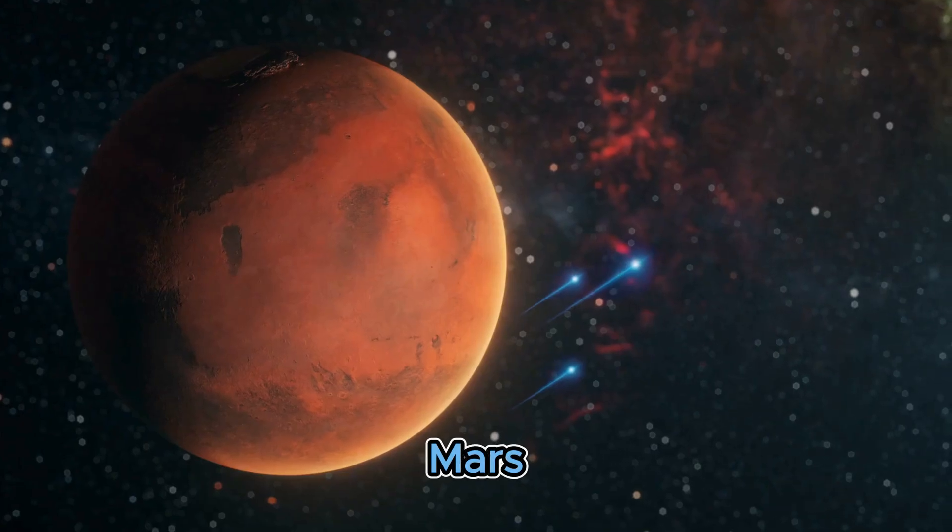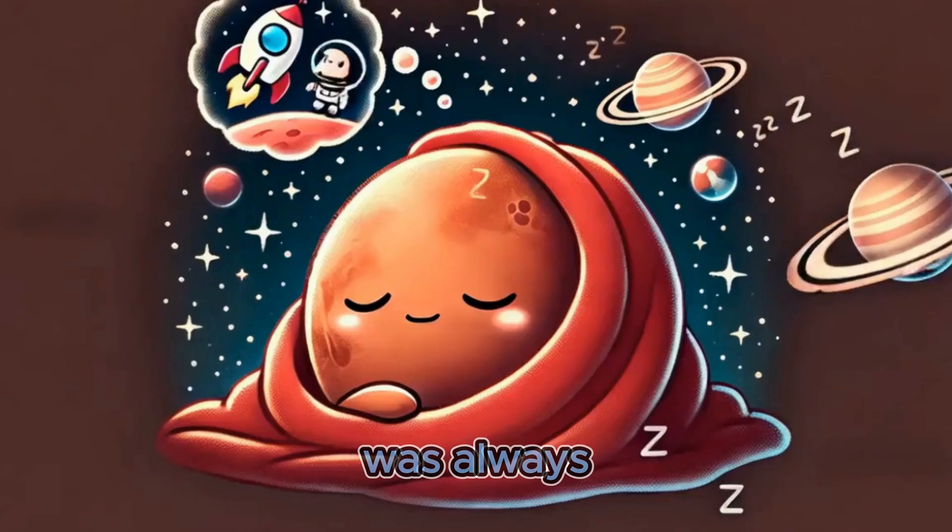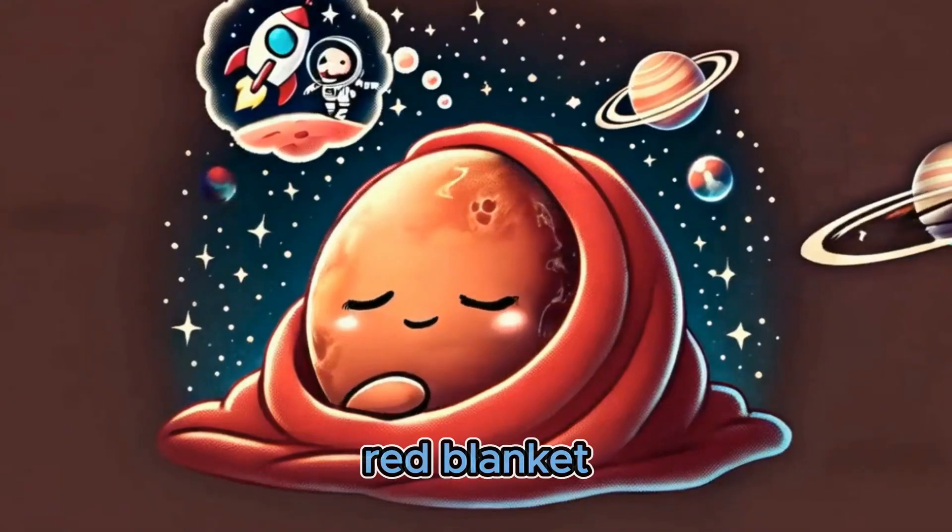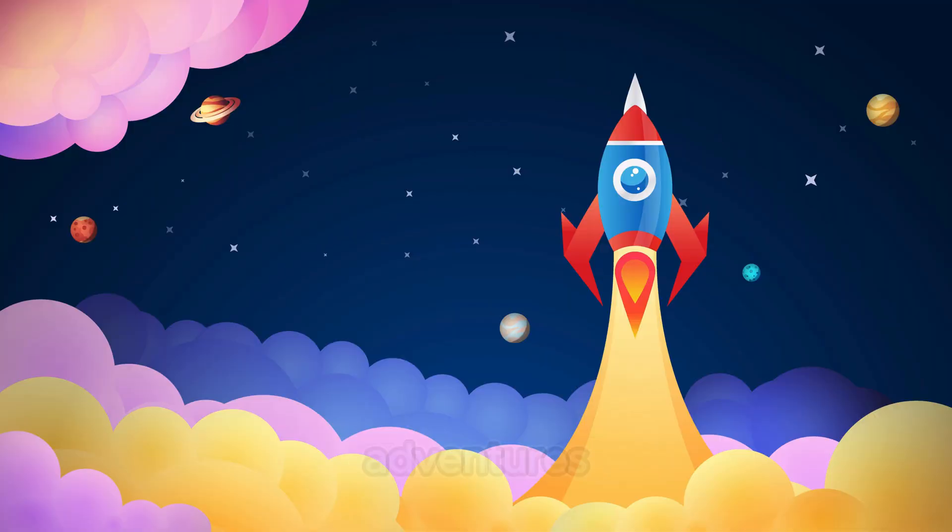After Earth, we have Mars, the red planet. Mars looked like it was always wearing a big, red blanket. It loved to dream about space adventures.